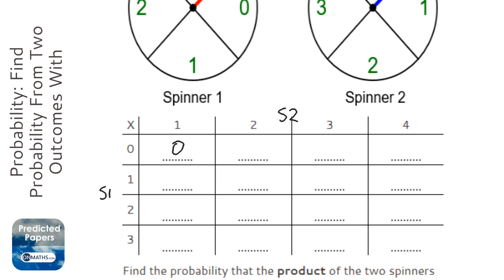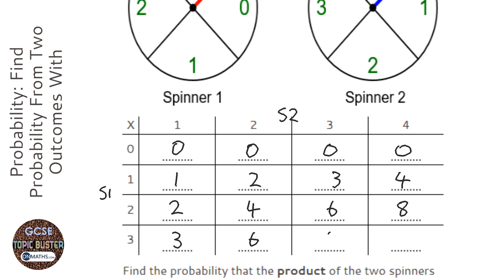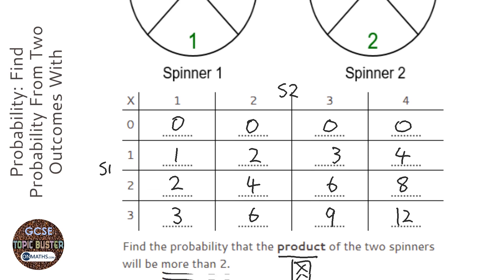So we're going to do one times zero equals zero. In fact, anything times zero equals zero. Then we're going to do one times one, one times two, one times three, one times four, two times one, two times two, two times three, two times four, and three times one, three times two, three times three, and three times four. So these are all our possible answers when we spin these two spinners.